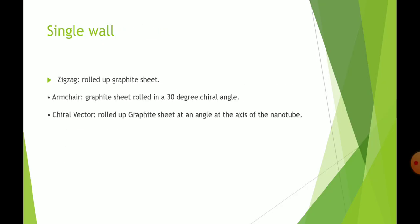Single wall nanotubes include the zigzag, armchair, and chiral vector configurations. The zigzag type is a rolled up graphite sheet. The armchair type is a graphite sheet rolled at a 30 degree chiral angle. The chiral vector is a rolled up graphite sheet at an angle at the axis of the nanotube.